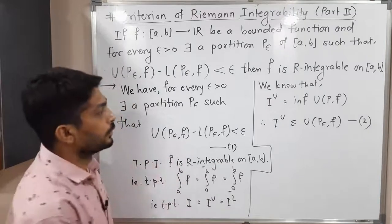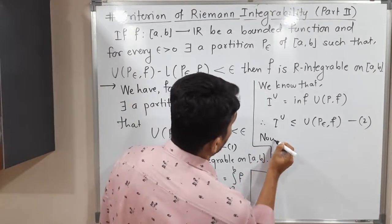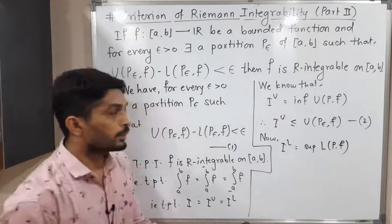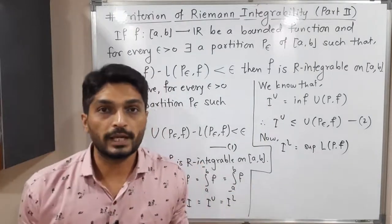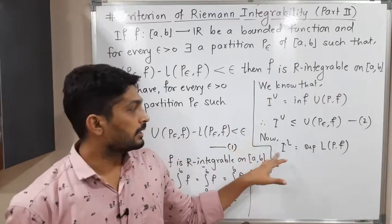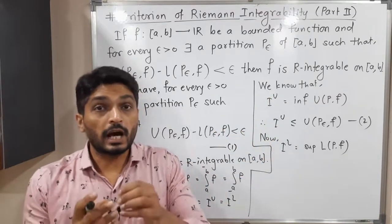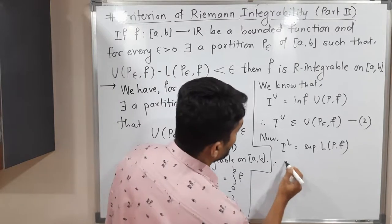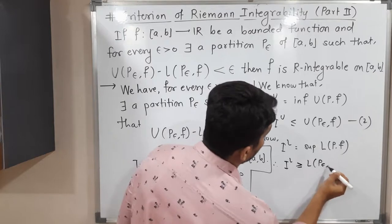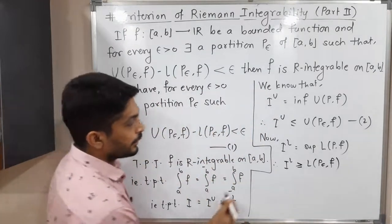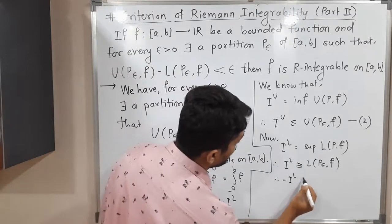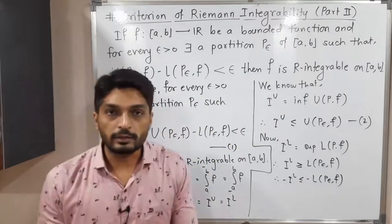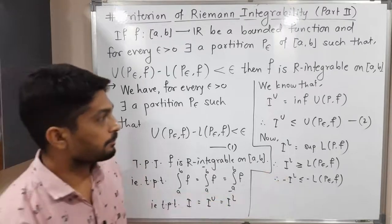Now for the lower integral. The lower integral is the supremum of L(P, F). Among all possible lower sums, the maximum value is the lower integral. So if you take any arbitrary lower sum, it is less than or equal to the lower integral. Therefore, I_L is greater than or equal to L(P-epsilon, F). Multiplying both sides by minus 1 and changing the inequality, we get: minus I_L is less than or equal to minus L(P-epsilon, F). I will call this inequality 3.